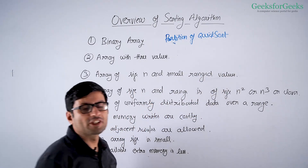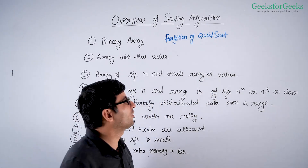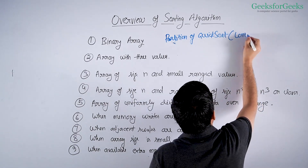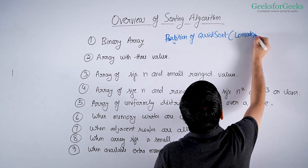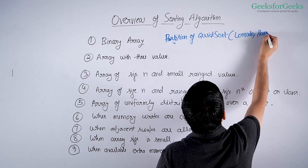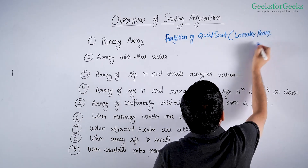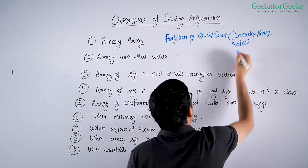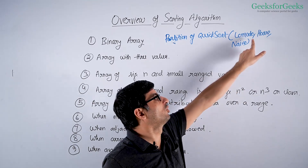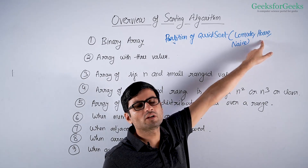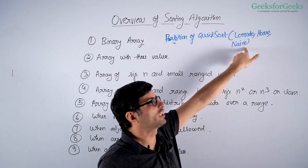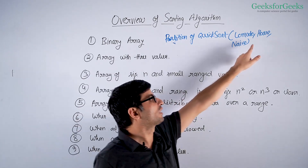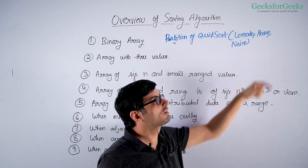The partition algorithms of quicksort are Lomuto, Hoare, and Naive. The advantage of Naive is it's stable. Lomuto is slower than Hoare. Both of them are faster than Naive because Naive requires extra space, but Naive is stable.